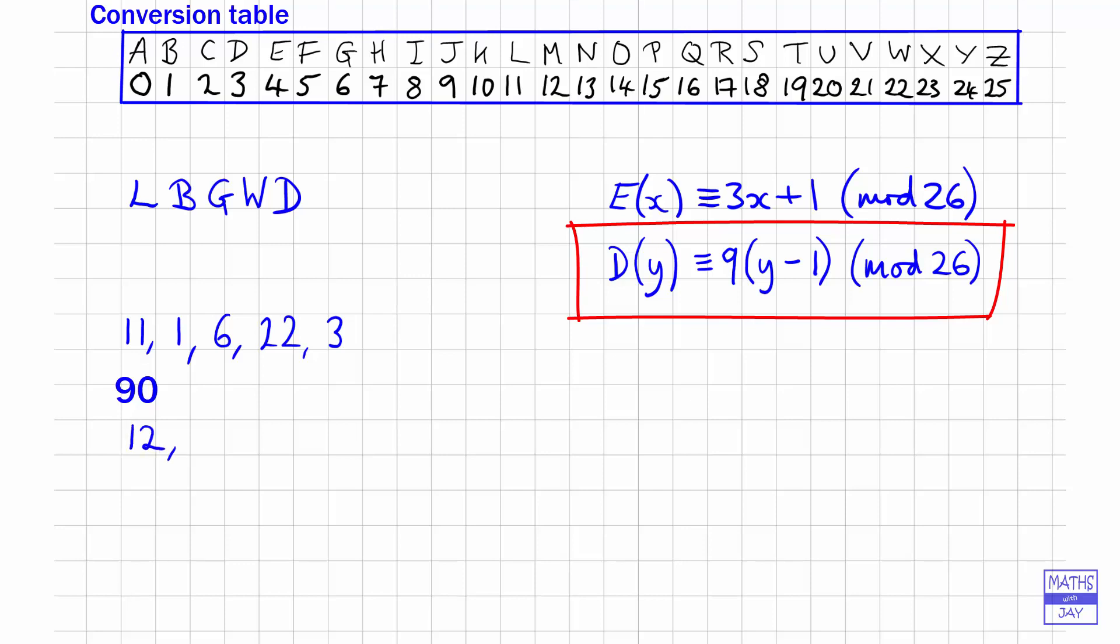Right, next one we've got 1. Oh, this is going to be easy because 1 subtract 1 is just going to be 0, and 0 times 9 will still be 0, so that gives us 0 for the second number. 6—that will map onto 6 subtract 1 is 5. 5 times 9 is 45. 45 take away 26 will be 19.